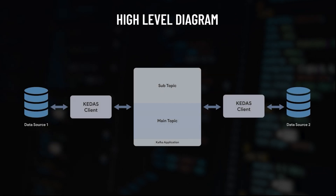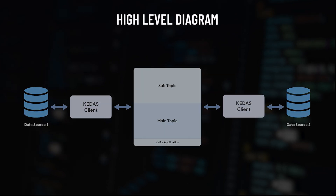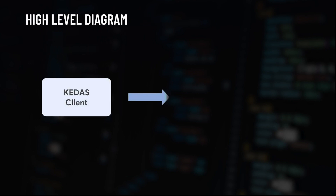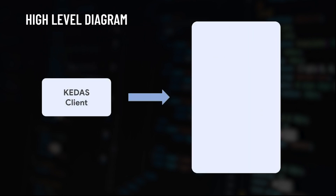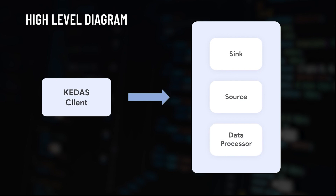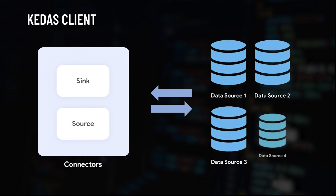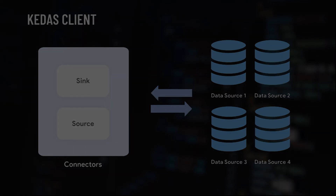Now let's look into the subcomponents of this high-level diagram. The KEDAS client consists of three subcomponents: a sync, a source, and a data processor. The sync and source are two Kafka connectors that help to connect the system with external data sources.